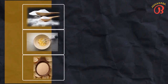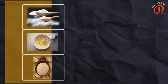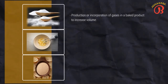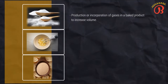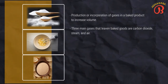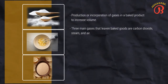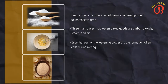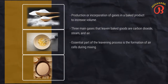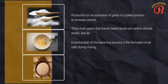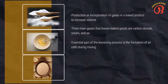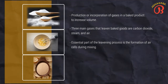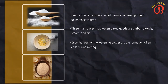Let's talk about leavening agents. Leavening is the production or incorporation of gases in a baked product to increase volume and produce shape and texture. These gases must be retained in the product until the structure is set enough. The three main gases that leaven baked goods are carbon dioxide, steam, and air. Two of these gases — steam and air — are present in all baked goods. An essential part of the leavening process is the formation of air cells during mixing. Even if a properly mixed dough or batter appears dense and compact, it actually contains millions of tiny air cells. Leavening gases are trapped in these air cells, which expand as they fill with gases and as the gases are heated. The walls of the cells are formed largely from gluten protein and sometimes egg proteins. They hold the gases and form the structure of the baked items.